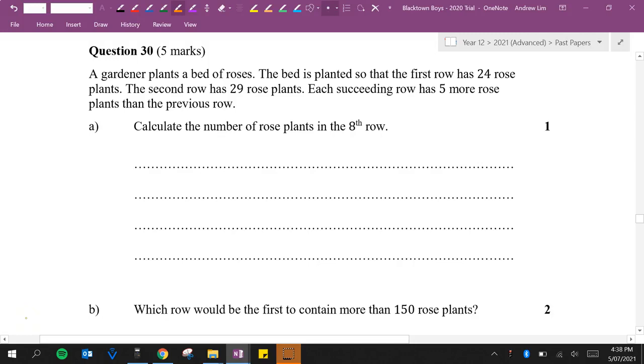Question 30 of the Blacktown Boys 2020 trial. A gardener plants a bed of roses. The bed is planted so that the first row has 24 rose plants, the second row is 29, and each succeeding row has five more rose plants than the previous row. Calculate the number of rose plants in the eighth row.